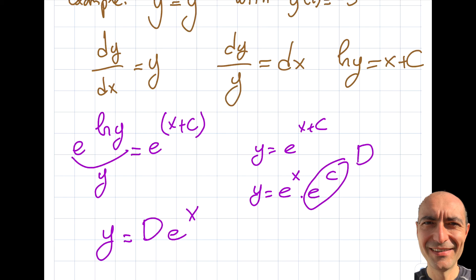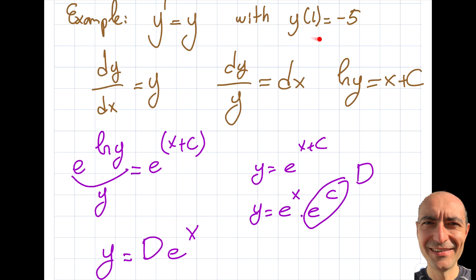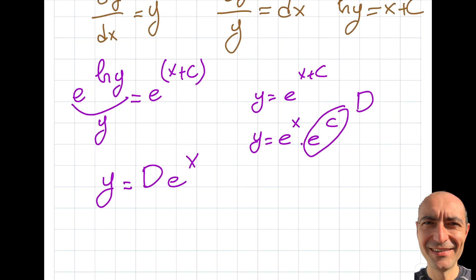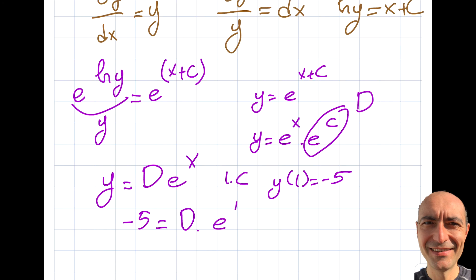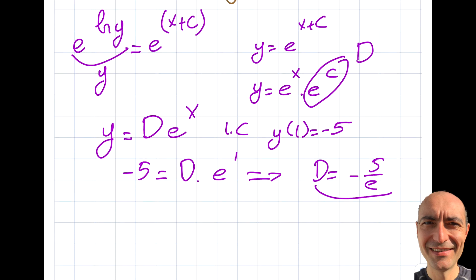Now I apply the initial condition y(1) = −5. Plugging in: −5 = D · e^1, so D = −5/e. Plugging that back into the general solution gives y = (−5/e) · e^x.